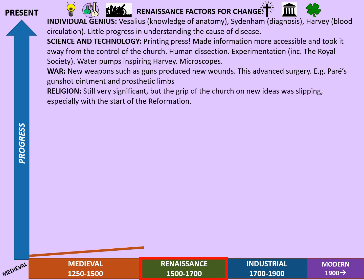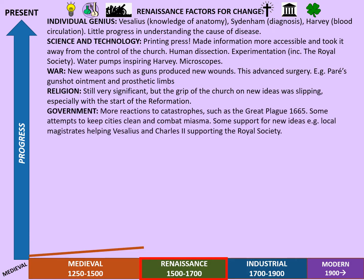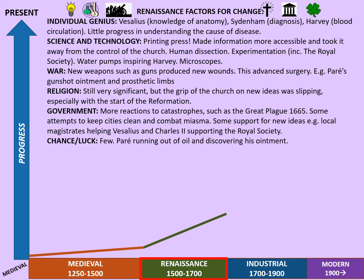Religion is still very significant in the Renaissance, but the grip of the church on new ideas was starting to slip, especially with the start of the Reformation. People were turning more towards humanist ideas, and that the causes of disease were not necessarily religious. Government is also important but not as important as it is later on — there are more reactions to catastrophes such as the Black Death in 1665 and some attempts to keep cities clean and to combat miasma. Some support the new ideas, for example local magistrates helping Vesalius and Charles II supporting the Royal Society. There are only a few examples of chance and luck, one being Paré running out of oil and discovering his ointment instead. This shows there was more progress in the Renaissance than in the medieval period.